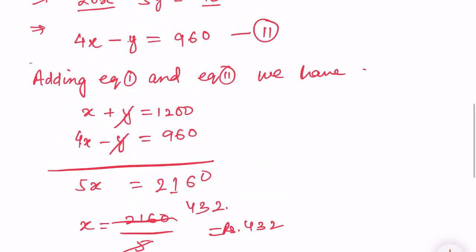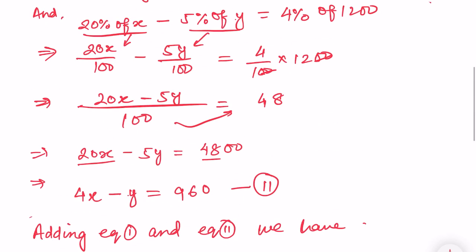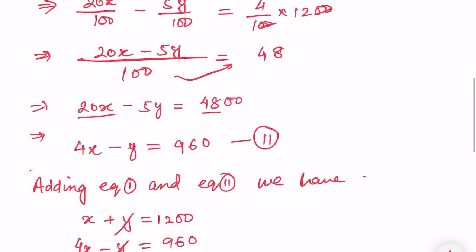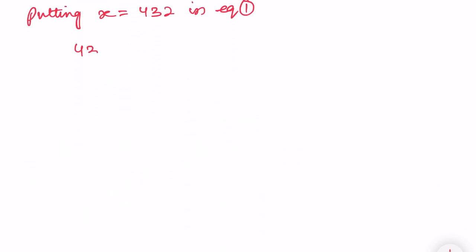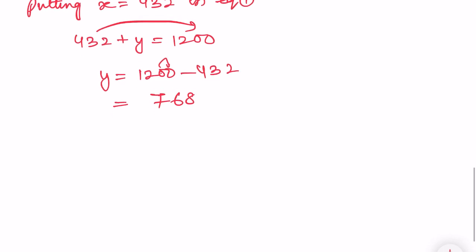Putting X equals 432 in equation number 1: 432 plus Y equals 1200. So Y equals 1200 minus 432, which gives Y equals 768. So the cost price of the chair is rupees 432 and the cost price of the table is rupees 768. Thank you so much, we will meet in the next video.